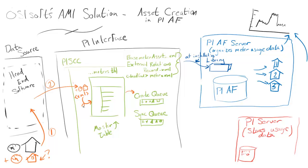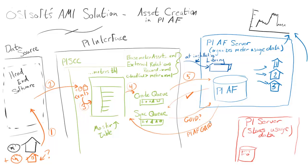So step one, step two, step three, step four, step five — go create an asset in PI AF. Once it's created, PI AF will send a confirmation back to the PI interface: yes, I created the asset. Then it's put into the sync queue, and the sync queue is asking PI AF: what's the unique identifier of that asset you just created? So that we can store it in the master table. PI AF responds with that GUID, and it's entered into the table. PI SCC also coordinates PI AF and the PI server so that the assets in the AF tree are linked up with the PI server tags. So when, for instance, we view a tag in PI Coresight, we can see the tag data through the AF asset.